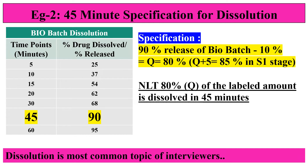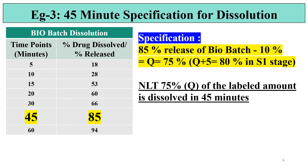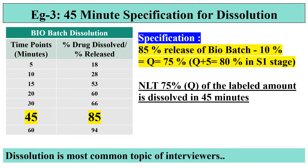Example 2: if you get 90% at 45 minutes, you subtract 10% from 90 to get 80, and a Q of 80% can be given. Similarly, if you get a value of 85%, you will get a Q value of 75%.